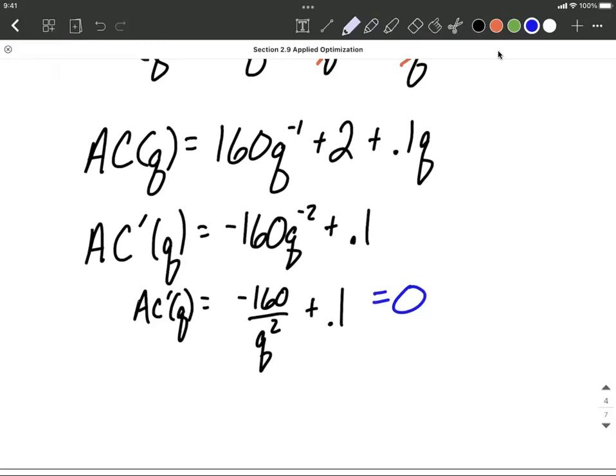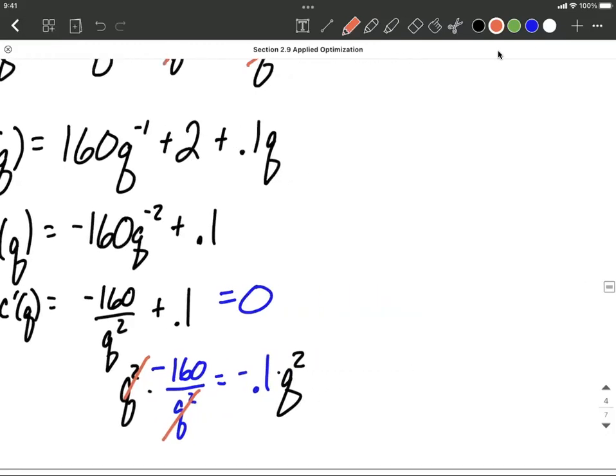The first thing I'm going to do is subtract the 0.1, move it to the other side. And then I can't solve for Q while it's stuck in the denominator, so I'm going to multiply both sides by Q squared. On the left-hand side, the Q comes out of the denominator. Multiplying and dividing by the same thing works out really nicely. So we're going to be left with negative 160 is negative 0.1Q squared.